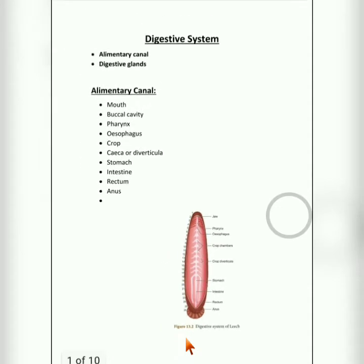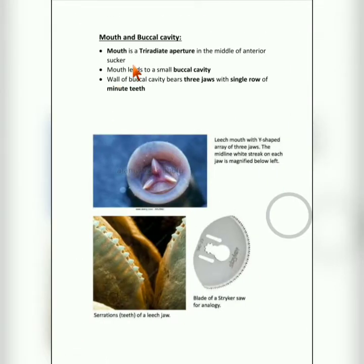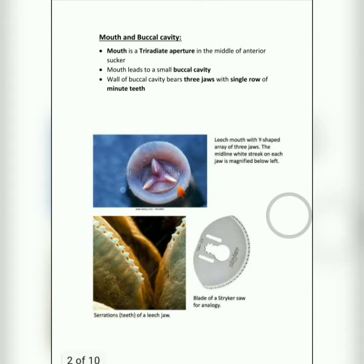Now we'll look at the first part — the mouth and buccal cavity. The mouth is actually a tri-radiate aperture, meaning it consists of three jaws. Tri means three, so three jaws are present — an upper jaw and two lower jaws. Each jaw bears a single row of teeth. These white structures visible are called teeth.